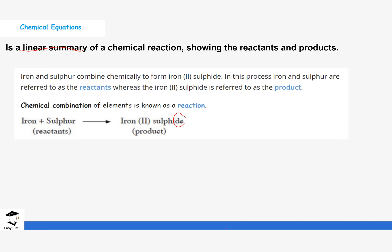Iron and sulfur react to form iron(II) sulfide. You can see this is referred to as a chemical equation, and specifically a word equation. In this process, iron and sulfur are the reactants — they are the ones reacting together — while iron(II) sulfide is what you get after the reaction, and we call it the product.